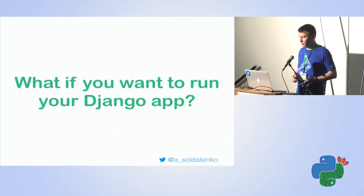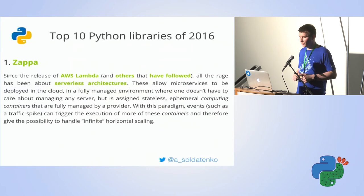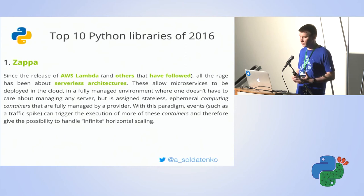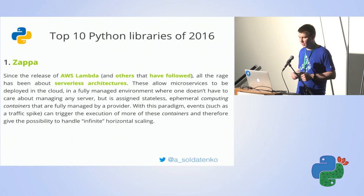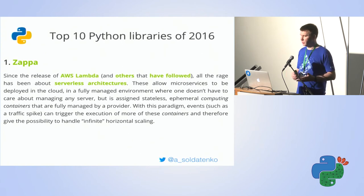You can also run Django on Lambda using Zappa — that's a quick mention since the previous speaker covered it. Interestingly, Zappa was a top-10 Python library last year, so the community and the problems it tries to solve are significant. But it's like Django itself — when you install Django you get everything, even though sometimes you need only one percent of it.